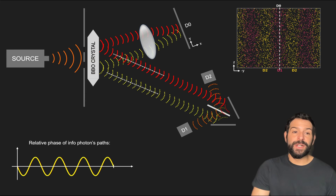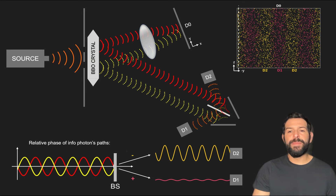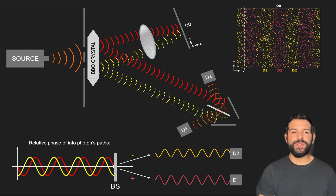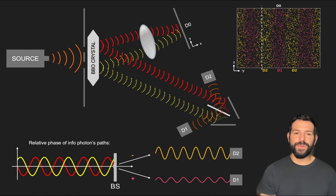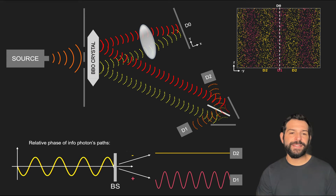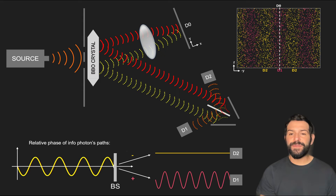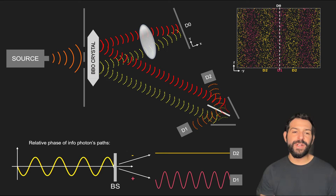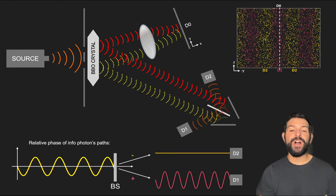So what the beam splitter really does is combine the incoming probability waves of the information photon, causing constructive and destructive interference towards detectors D1 and D2 that depends on where on the screen the photon was localized. And since the beam splitter adds different relative phase shifts between the transmitted and reflected signals towards D1 and D2, the interference results we see are complementary.